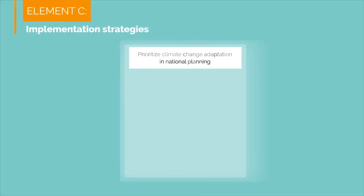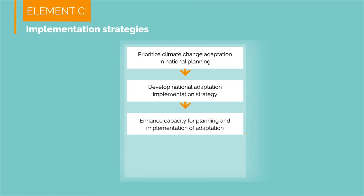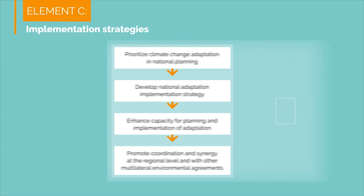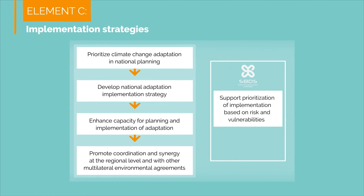The proposed steps in Element C are: prioritize climate change adaptation in national planning; develop a national adaptation implementation strategy; enhance capacity for planning and implementation of adaptation; and promote coordination and synergy at the regional level and with other multilateral environmental agreements. In Element C, the S8 Downscaler will help support prioritization of implementation based on risk and vulnerabilities and facilitate cross-sectoral implementation.